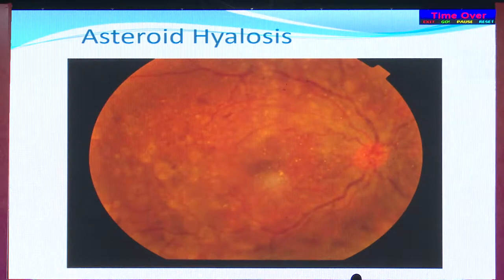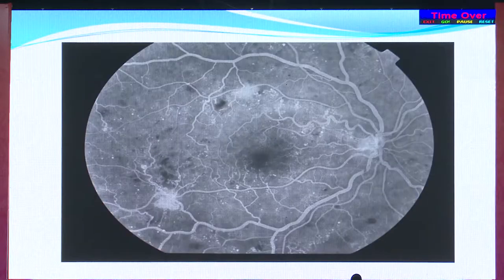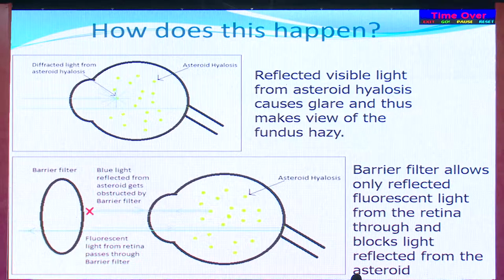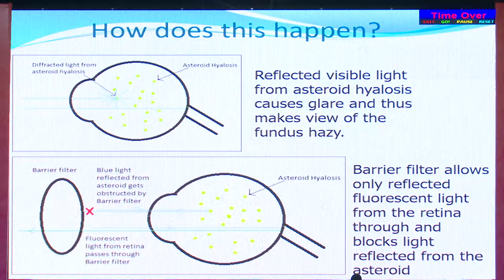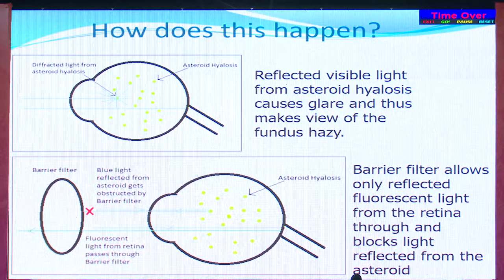In asteroid hyalosis, clinical fundus examination is limited because the asteroid bodies reflect light and obscure the view. However, when you perform angiography, the barrier filter removes these reflected lights and only the fluorescence from the retina is captured. This is why angiography provides a much better view in cases of asteroid hyalosis.